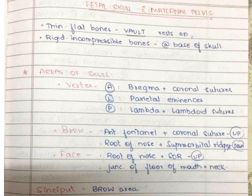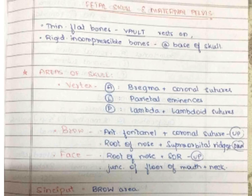The cranial vault can be divided into three parts: the vertex, the brow, and the face. The vertex is a quadrangular area extending anteriorly till the bregma and the coronal sutures, laterally to the parietal eminences, and posteriorly by the lambda and the lambdoid sutures. The brow is an area extending from the bregma and the coronal sutures down to the root of the nose and the supra-orbital margins of either side of the eye.